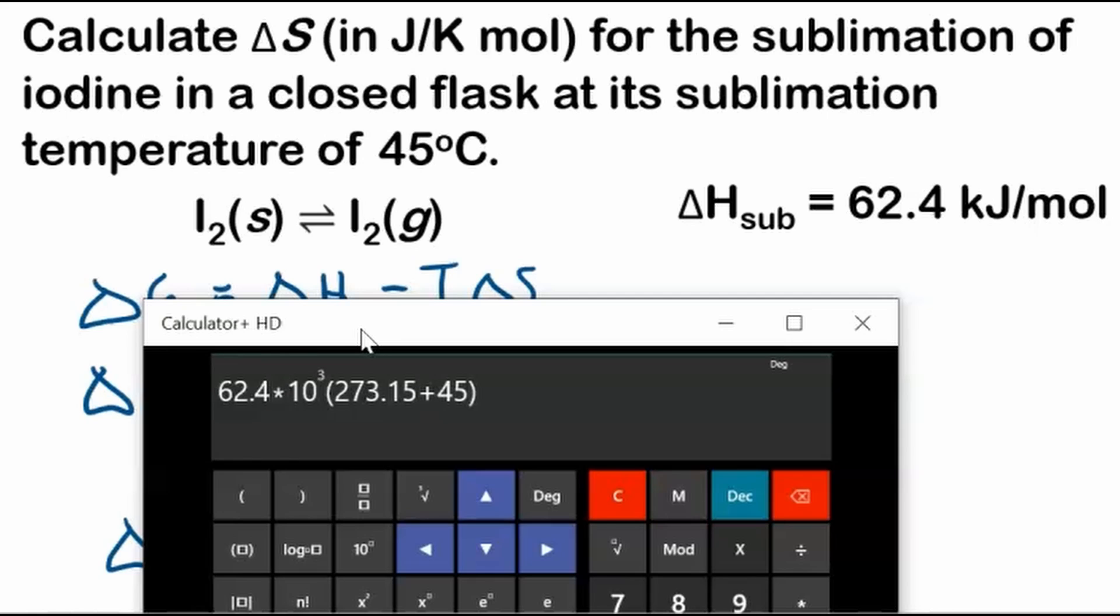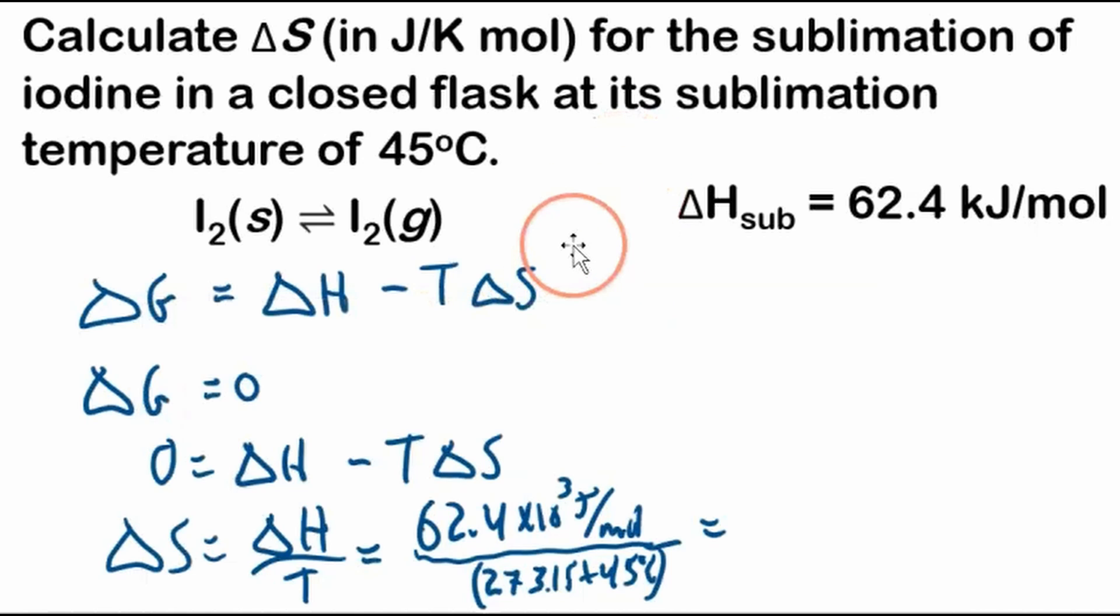And I'll put that in our calculator. So 62.4 times 10 to the power of 3 divided by 273.15 plus 45. I love these calculators where you can see what you typed. There we go. Now I won't get it wrong. 196.1. So that's 196.1 to 3 sig figs and joules per mole Kelvin.